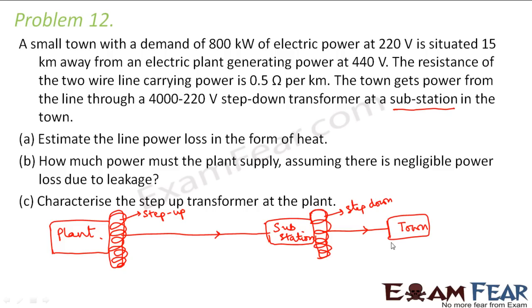The demand of this town is 800 kilowatts at 220 volts, and it is situated 15 kilometers from the plant. The plant is generating at 440 volts. So it generates power at 440 volts, then uses a step-up transformer to increase from 440 volts to a higher value. The town gets power through a 4000 to 220 volt step-down transformer.